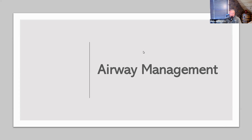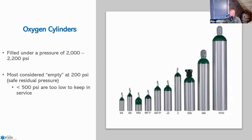We're going to pick back up with the airway management portion here. So oxygen cylinders—based on information in the current textbooks and what is found on National Registry—they are filled under a pressure of 2,000 to 2,200 PSI. And most of these are going to be considered empty at 200 PSI.